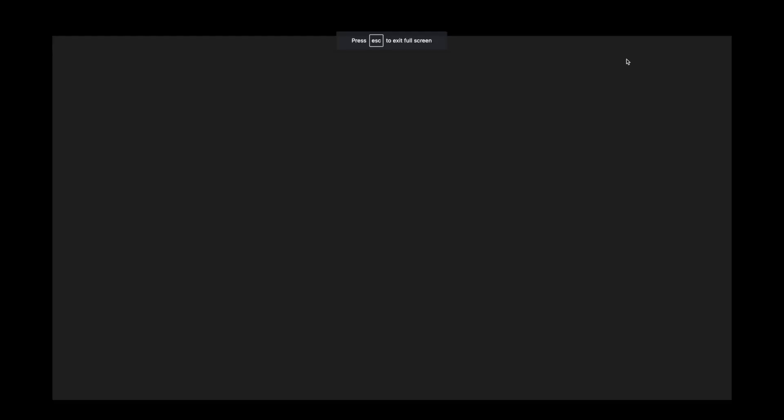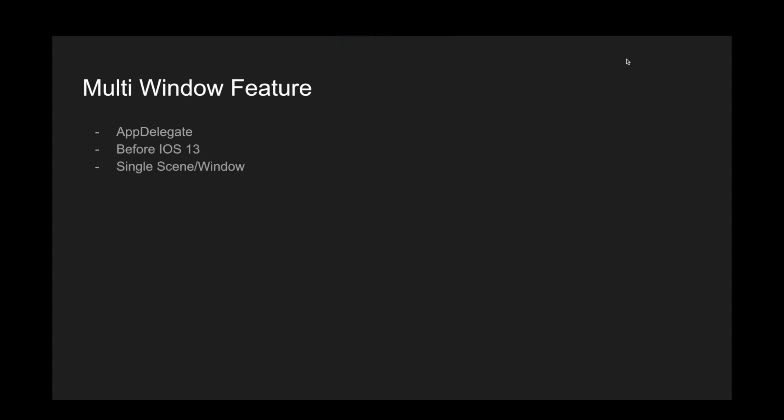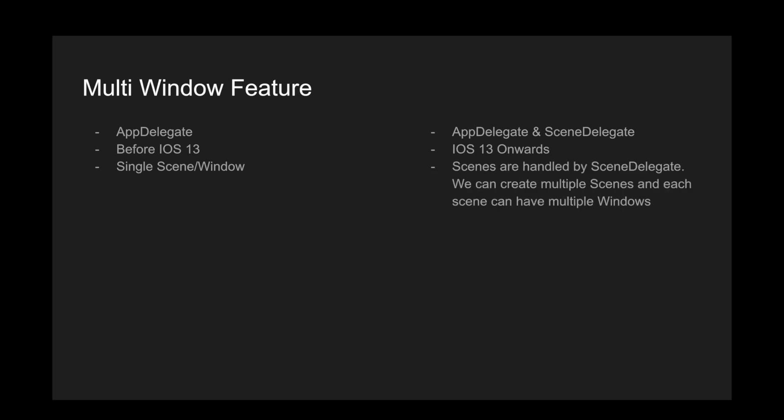When you are creating a project using iOS 13 onwards, you are going to see there is an AppDelegate file and a SceneDelegate file. It wasn't present before iOS 13 because we had a single scene and window to be displayed. After iOS 13 we have two files: AppDelegate and SceneDelegate.